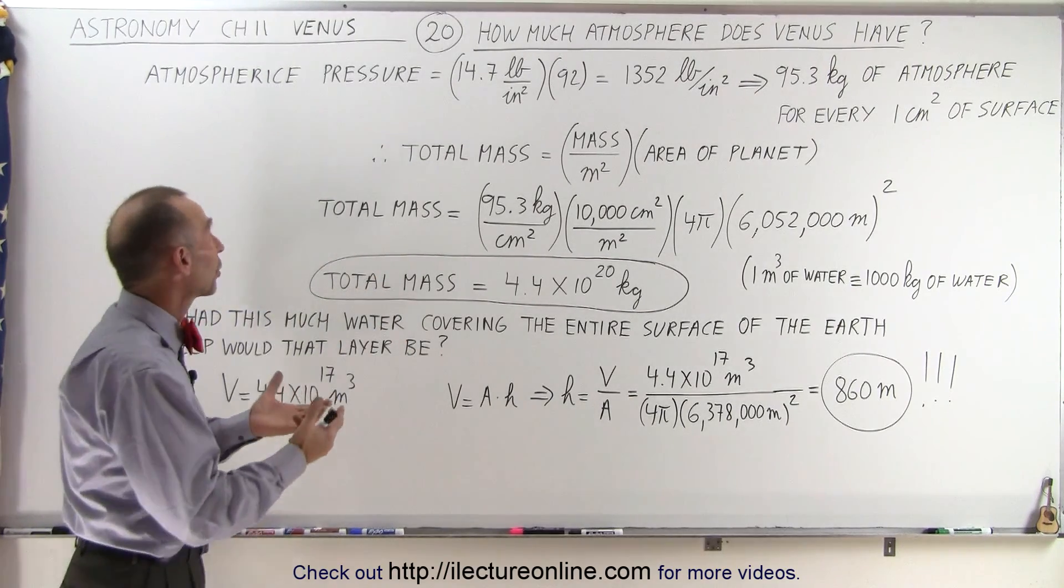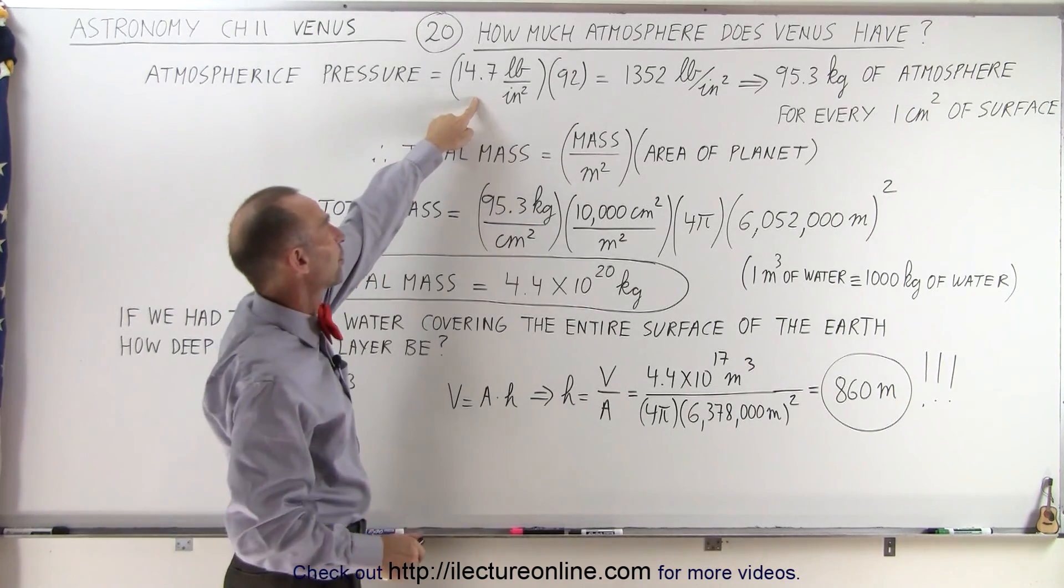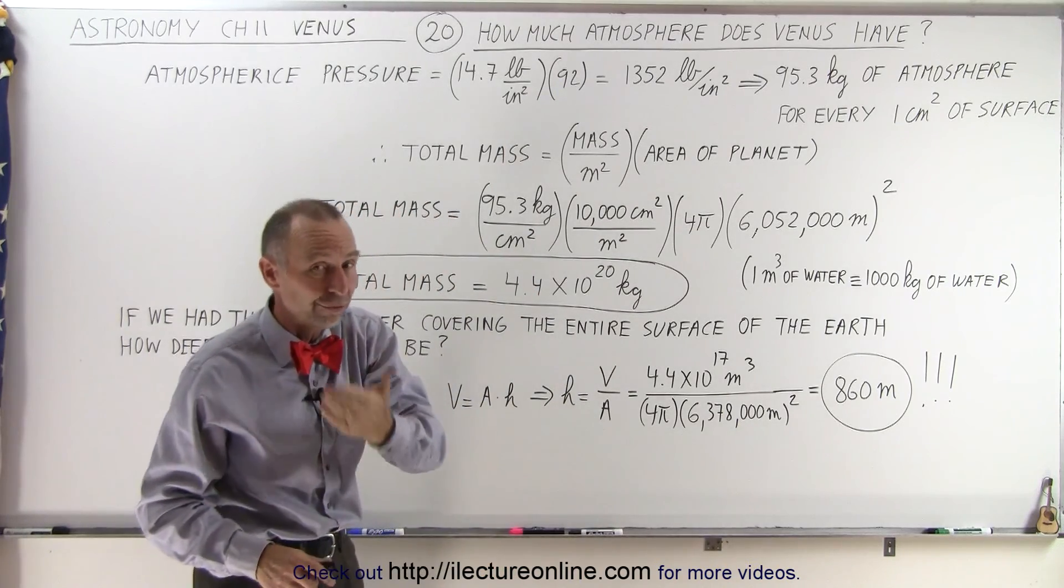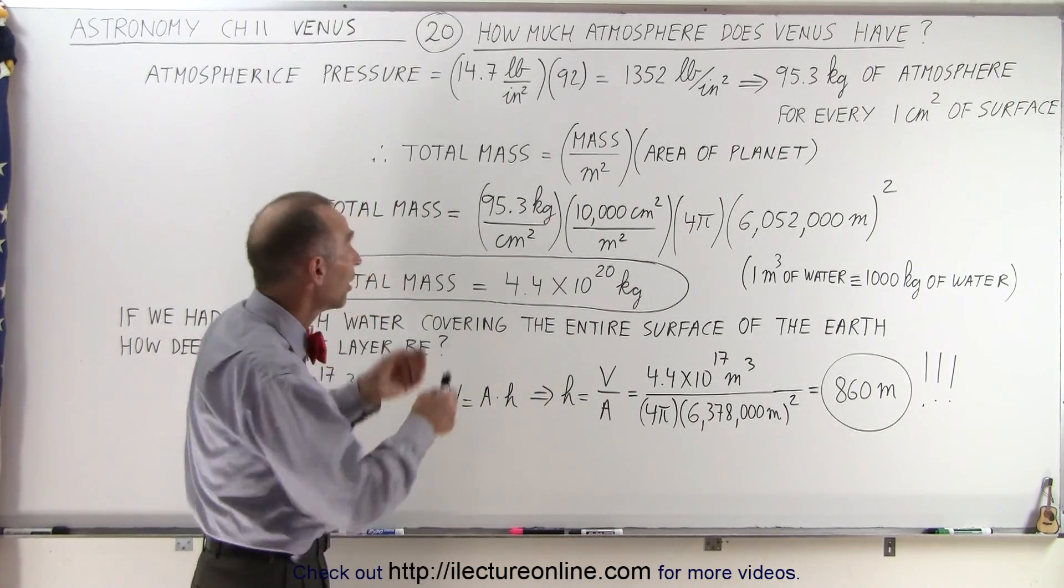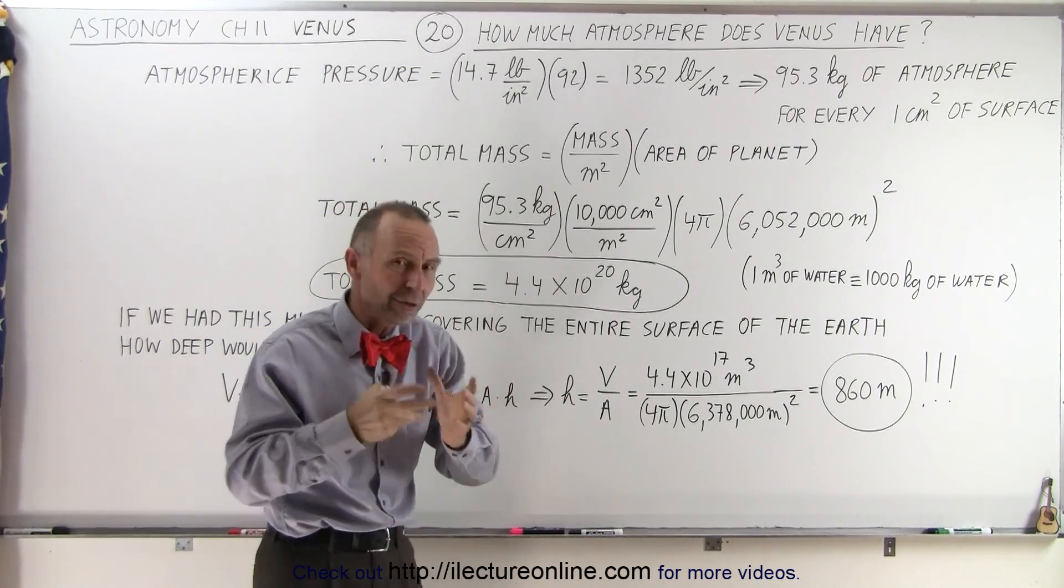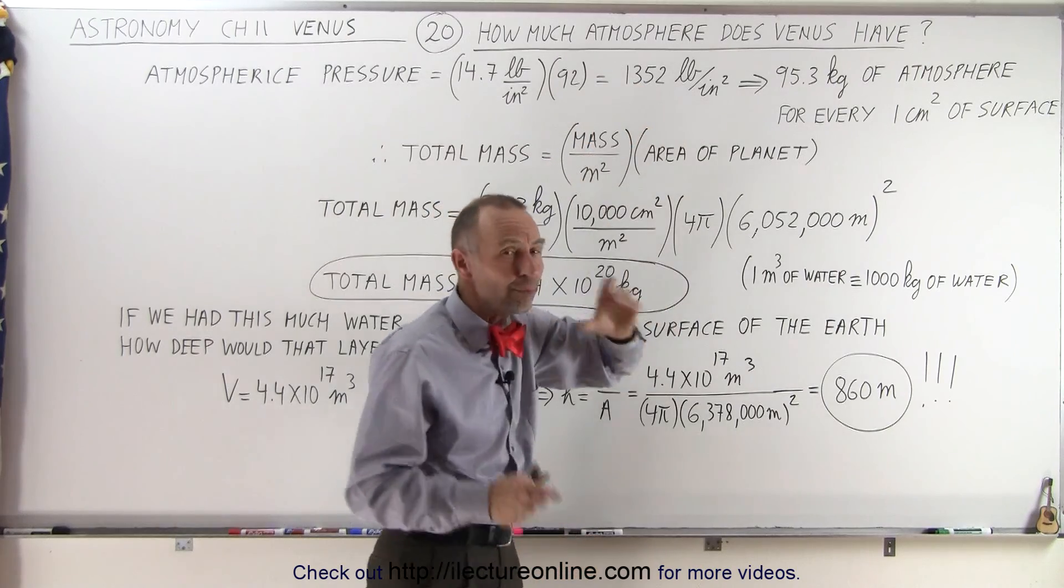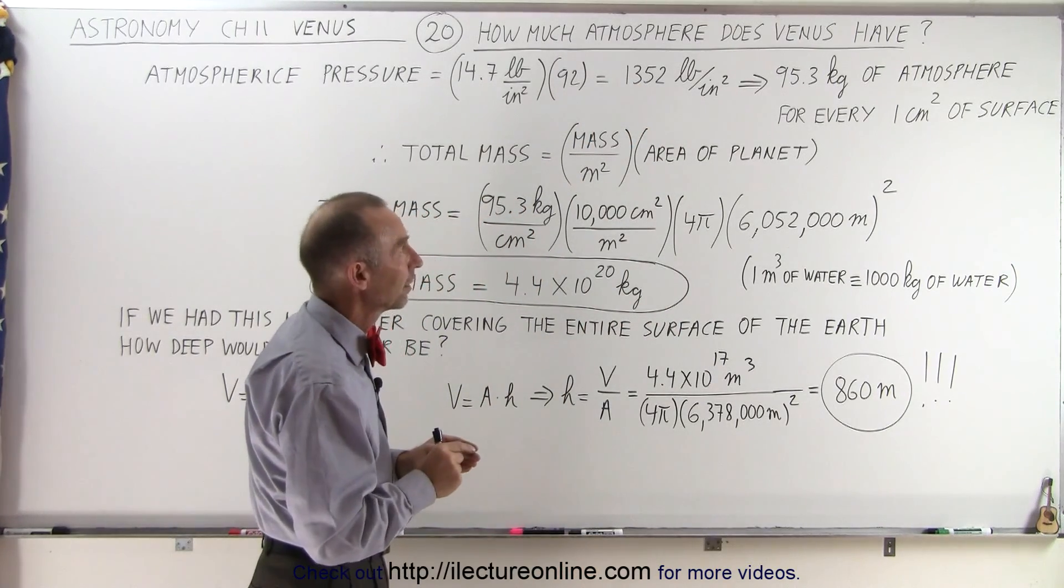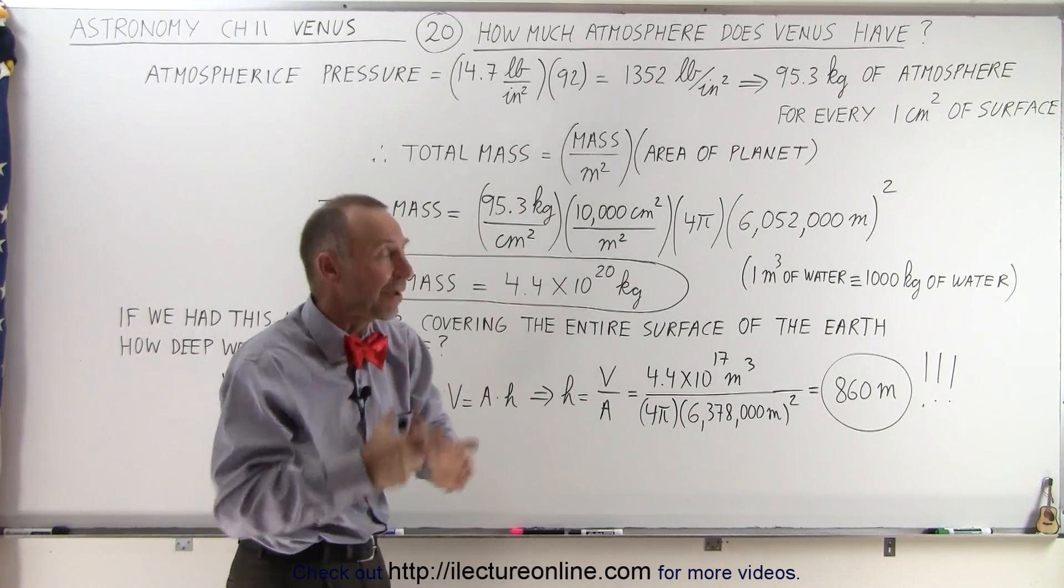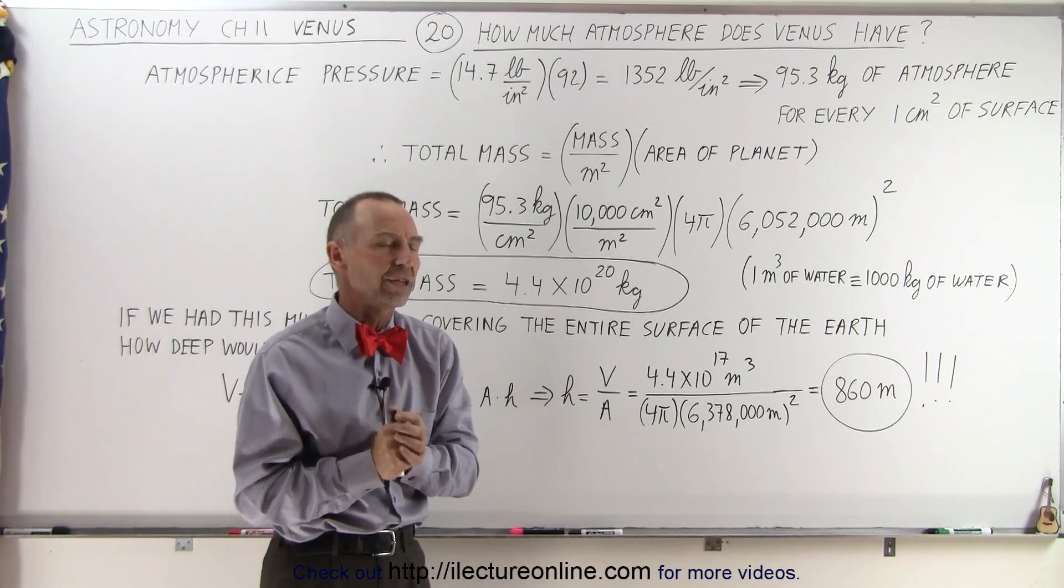One way to do that is to look at the atmospheric pressure and realize that we take Earth's atmospheric pressure and multiply it times 92, because the atmospheric pressure on Venus is 92 times the atmospheric pressure on Earth, which means that the atmospheric pressure on Venus is a whopping 1,352 pounds for every square inch of surface. That equates to 95.3 kilograms of atmosphere for every one square centimeter on the surface of Venus.